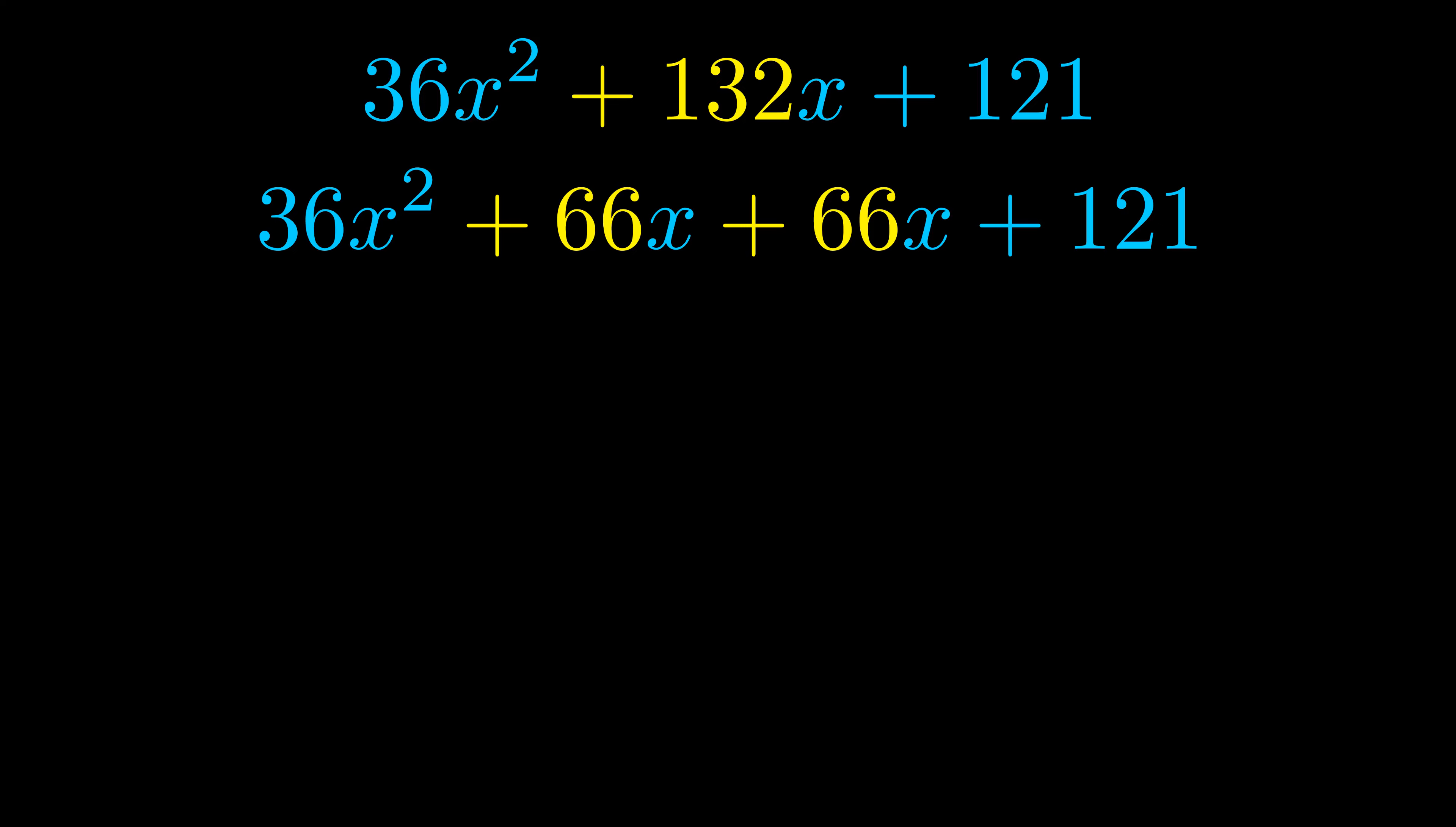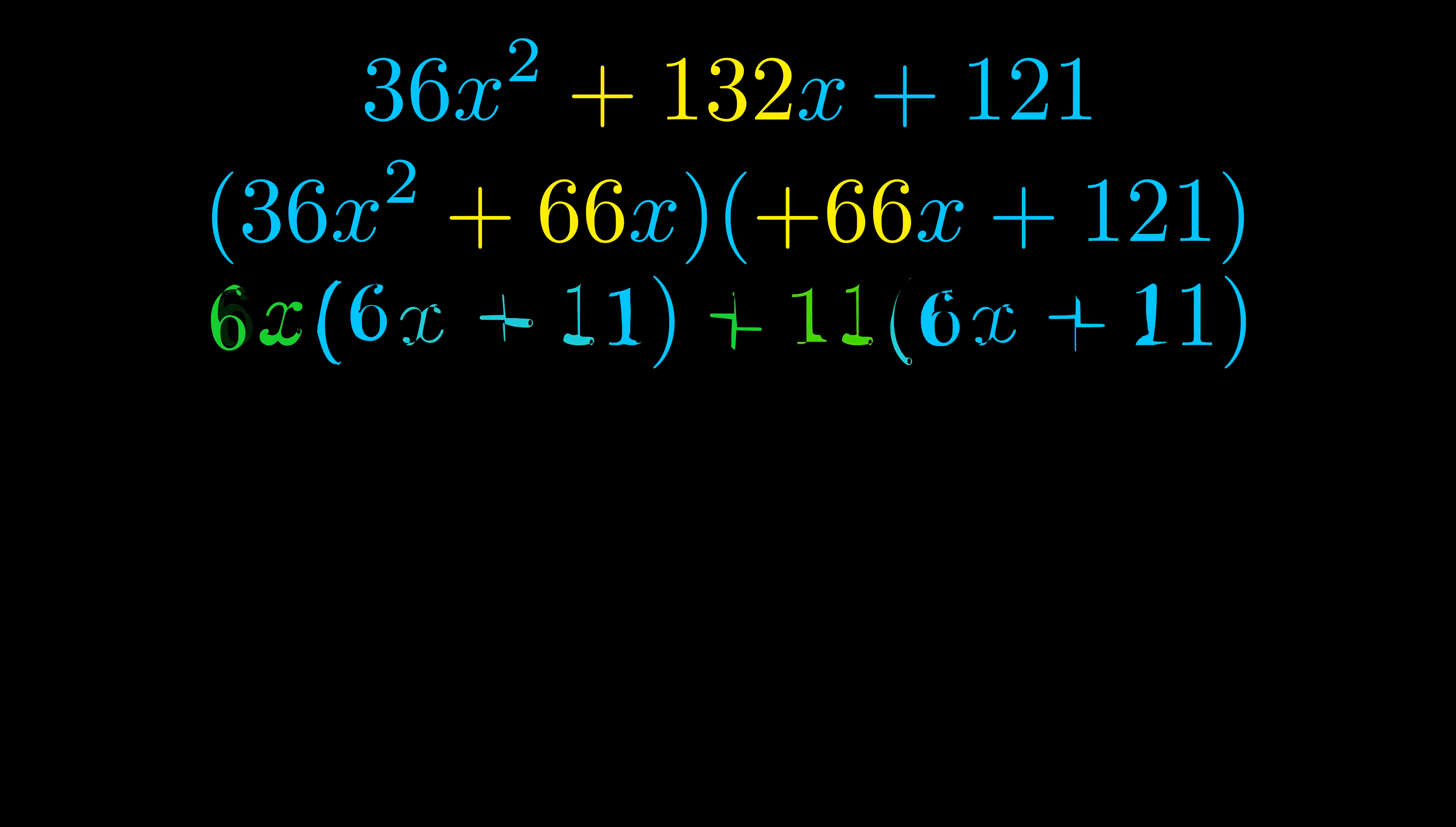Once we've done this, we go ahead and put parentheses around the first term and the last term. And we do that so that we can take the greatest common factor out of both terms. We can see the greatest common factor is now outside in green. Notice also how what remains inside of the parentheses is the same in both cases.